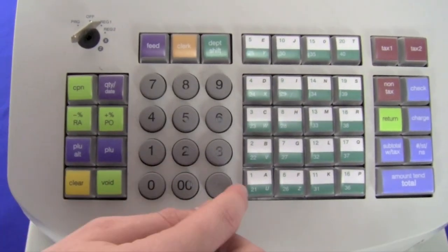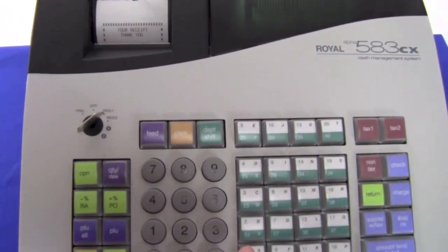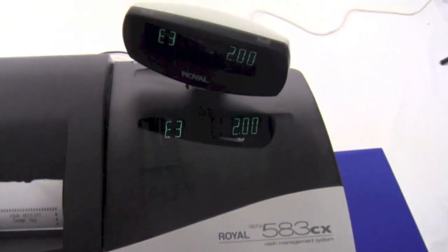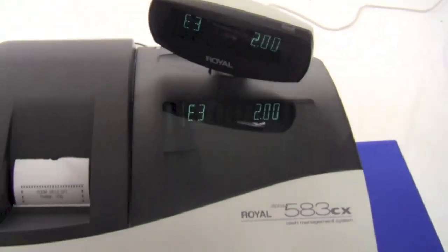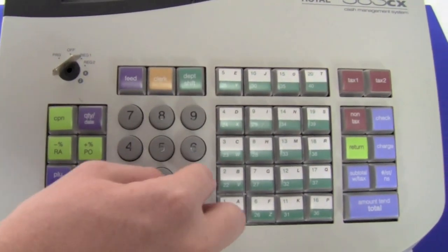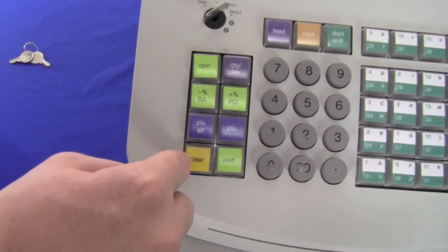While using the machine, say the user makes a mistake. The register will alert users of an error, which is displayed on the screen, and the register will make a loud beep until the clear key is pressed.